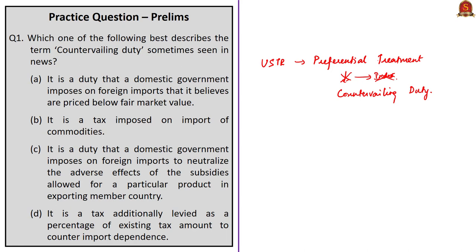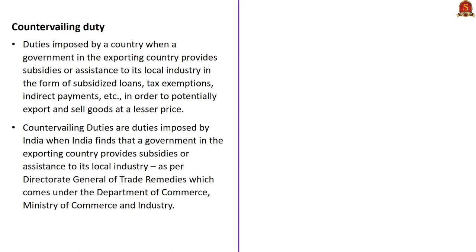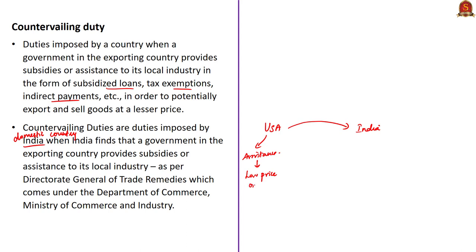Countries like India, which are no longer given special consideration, will have lower levels of protection against a countervailing duty investigation by the USA since February onwards. What you need to know is about countervailing duty. As per the Directorate General of Trade Remedies under the Department of Commerce, which comes under the Ministry of Commerce and Industry, countervailing duties are those duties imposed by a domestic country — in this case India — when that country finds that a government in the exporting country provides subsidies or assistance to its local industry, such as subsidized loans, tax exemptions, or indirect payments.